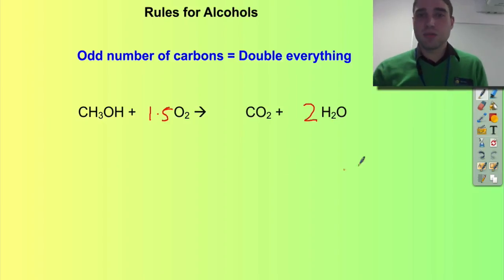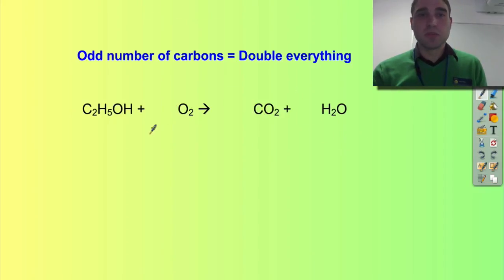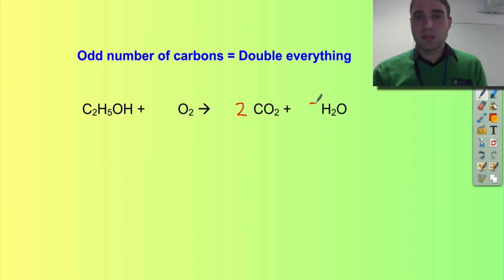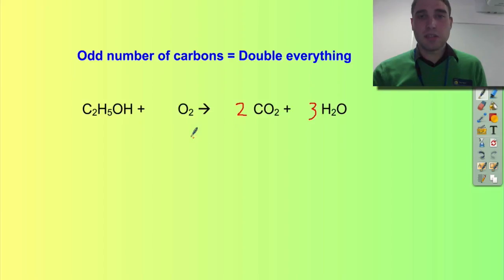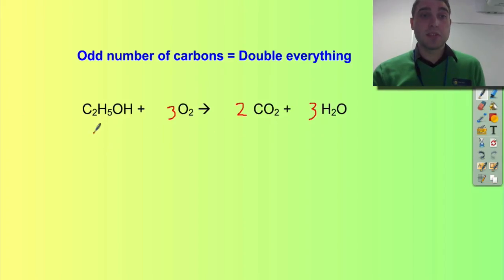Now let's look at an example with an even number of carbons: ethanol. We've got two carbons on this side, so we don't need to double. How many hydrogens? We've got six, so we're going to need three water molecules. How many oxygens on the products side? Four plus three is seven. We already have one oxygen in the ethanol, so we need three oxygen molecules — one plus three is four... wait, four plus three is seven, so now we're balanced. You can see that with an even number of carbons in the alcohol, we don't need to double.